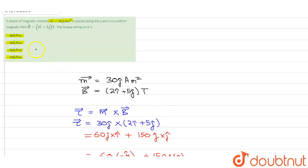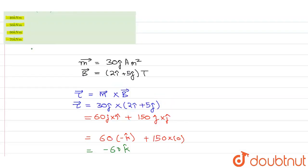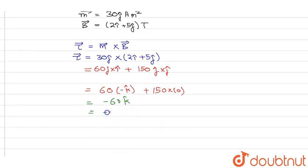So from here, from the options, our correct option is the third option which says this is equal to minus 60 k cap newton meter.